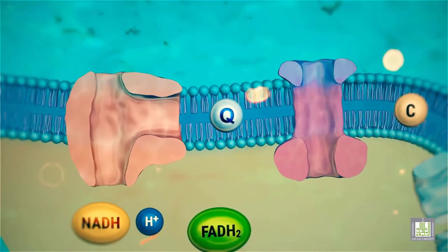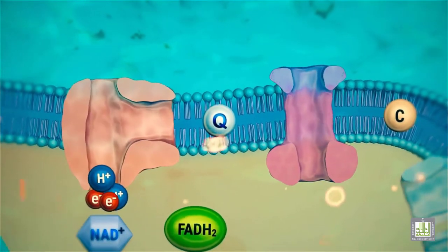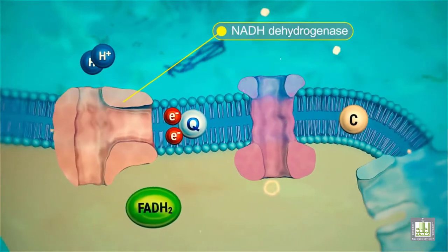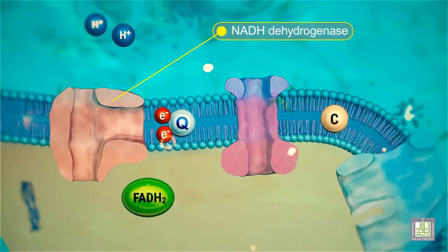In the mitochondria, the electrons from NADH plus H plus are transferred to the electron carrier proteins and the protons are transferred across the membrane.